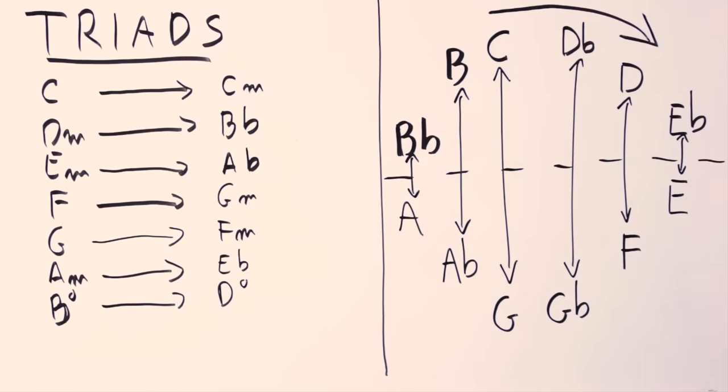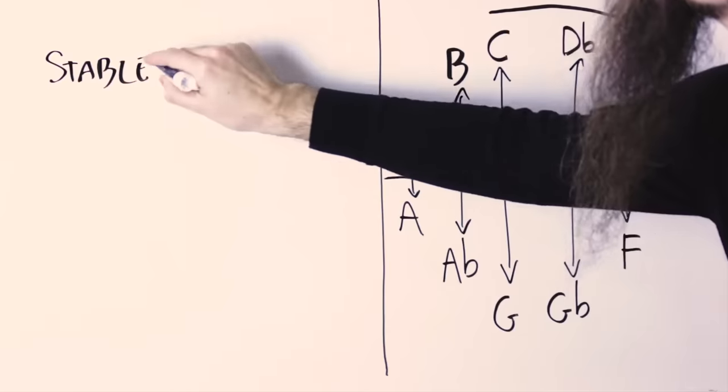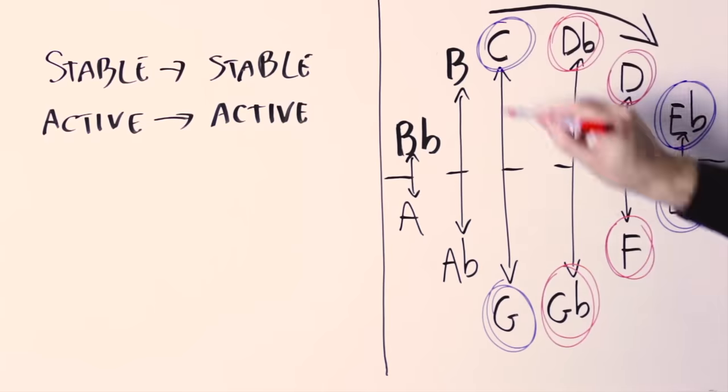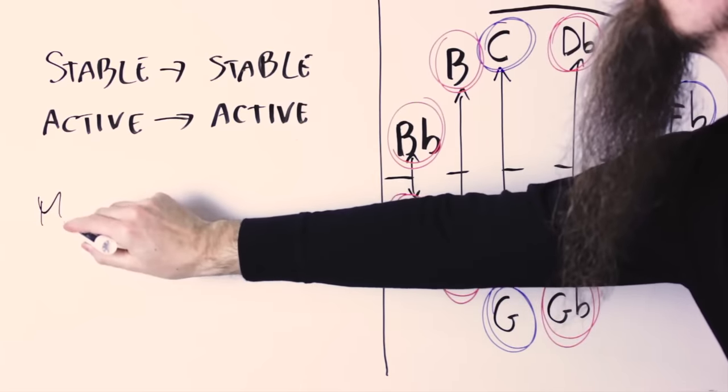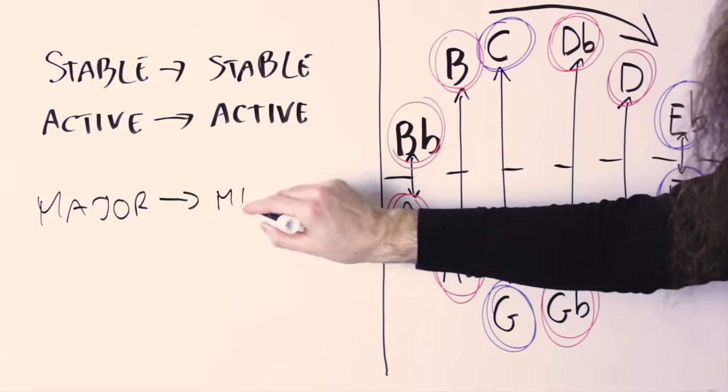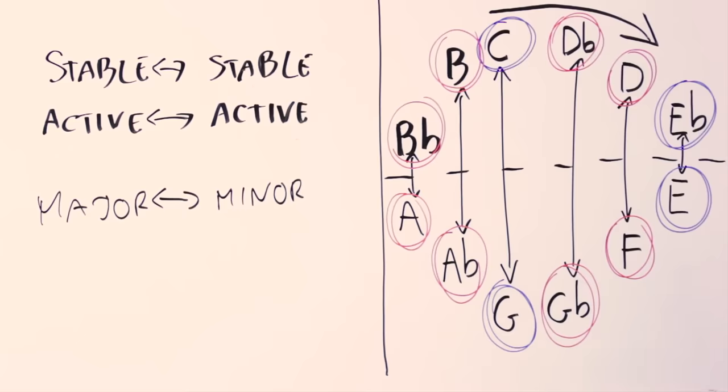Now, a question you might have right now is why we flip all those notes along that specific axis, and not any other axis. And the answer is, because this is the only axis that transforms stable notes into stable notes and active notes into active notes, and also transforms the major scale, the C major scale, into a C minor scale. Any other axis will not transform active notes into active notes and stable notes into stable notes, and so when you transform your chords this way, it will not sound good, because you are messing up all the tension structure of your chord progression.